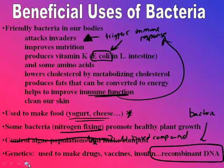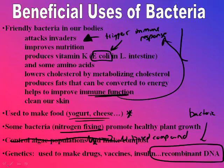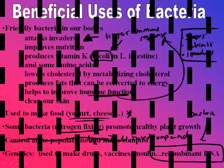The big things for you to know are: the different shapes, how bacteria attain nutrients — anaerobic, aerobic, facultative, or obligate — and how they reproduce. If you can do that, you're set to go.